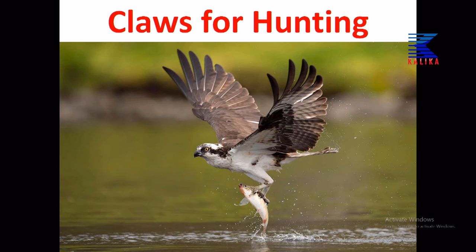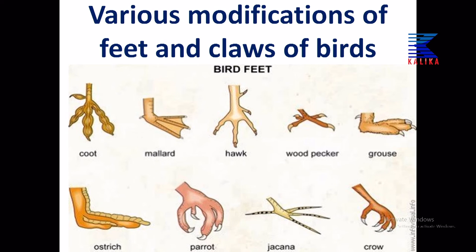Claws for hunting: this bird is hunting a fish and holding it with its claws — modified and very strong for easily grasping fish. There are various modifications of the feet and claws of birds — for example, coot, mallard (like a duck), hawk, woodpecker, goose, ostrich, parrot, jacana, and crow.